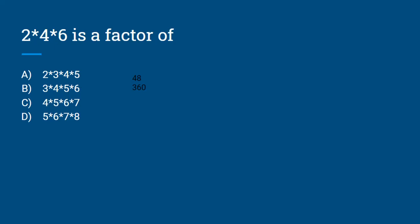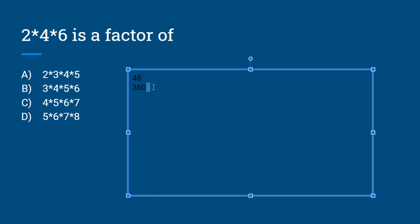Now let's try 5 times 6 times 7 times 8. We get 1,680. We divide that by 48, and we get an even number, which is 35. So our answer will be D.